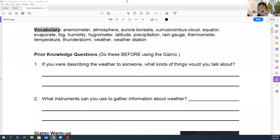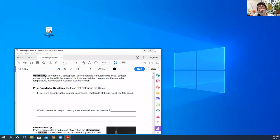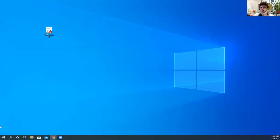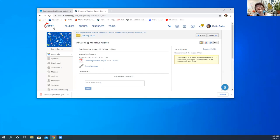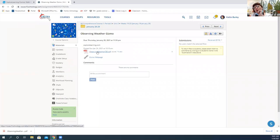So we're working on the gizmo. The gizmo can be found on Schoology under the date for today, which is the 28th. I'm going to click on the gizmo. It's going to download to the bottom of my screen. I'm going to click on that.